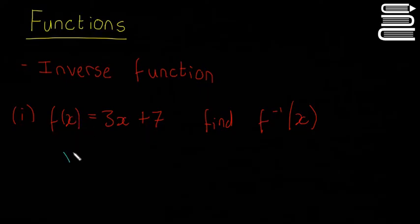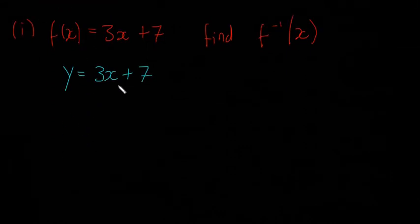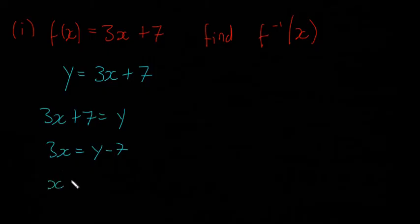You're going to take this and write y is equal to 3x plus 7. So you sub y in for f(x) and then rearrange this as follows. I'm going to write it like 3x plus 7 is equal to y. Then I'm going to say 3x is equal to y minus 7. I'm going to divide both sides by 3. I'm going to be left with x is equal to (y minus 7) over 3.